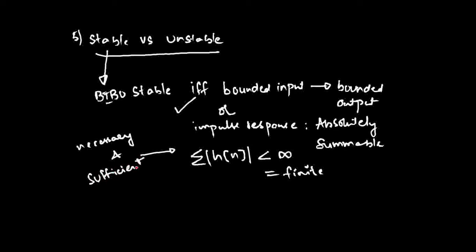If a system does not satisfy this property — that is, if the summation of the absolute value of the impulse response is not finite — then it is said to be an unstable system.